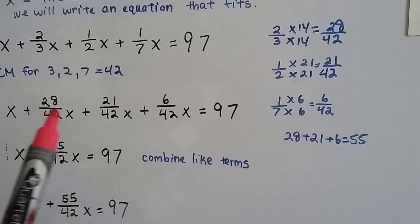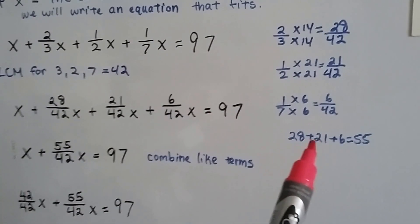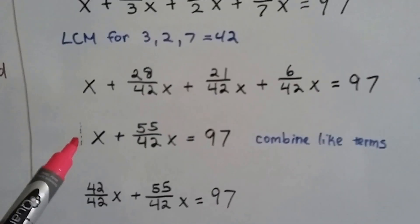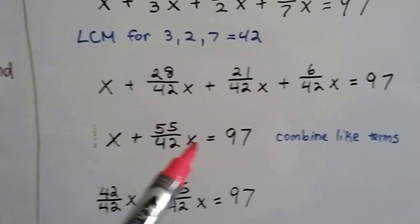Now we can add the numerators. And when we add 28, 21, and 6, we get 55. So now we have x plus 55 over 42x equals 97.